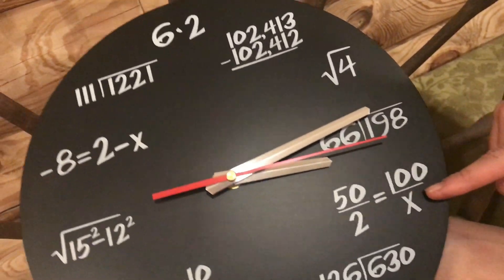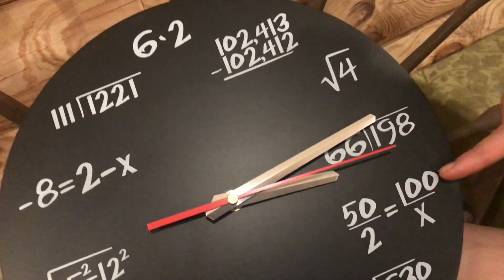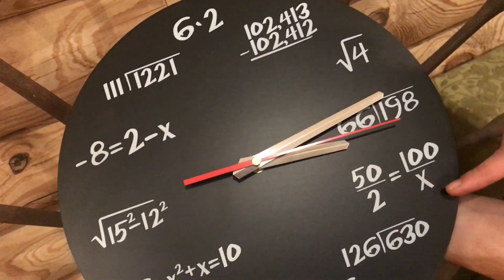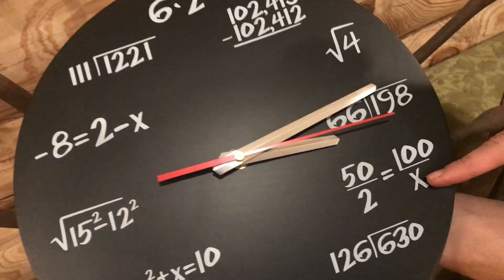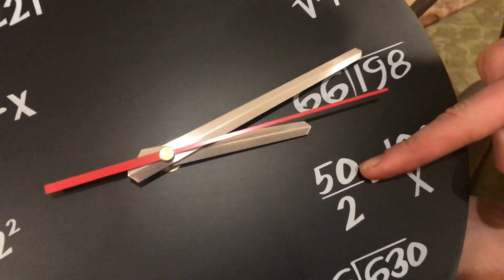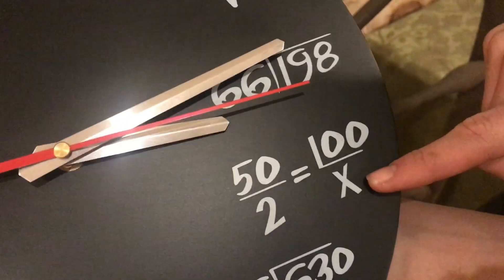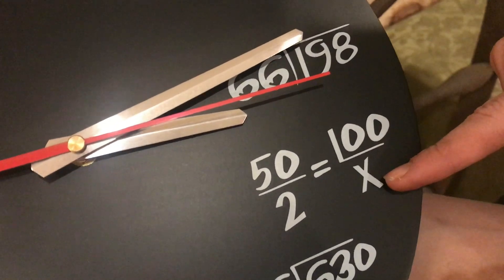This is an equation, 50 over 2 equals 100 over x. It's a proportion problem, so you would solve this. If you didn't realize that it's 4 just because multiply the top and bottom of this by 2 and you get that. If you didn't realize that, you could do cross multiplication.